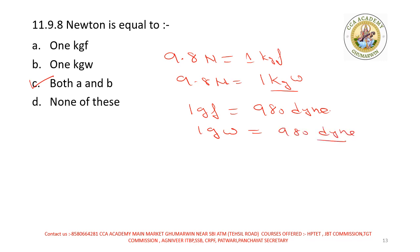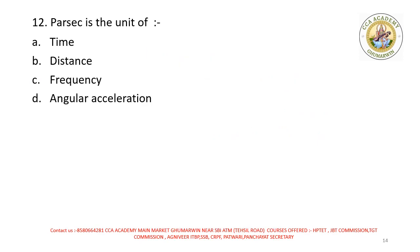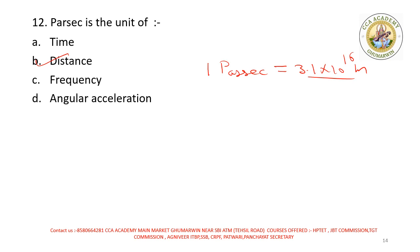Parsec — which unit is called? Options: time, distance, frequency, angular acceleration. Right option is option B — distance. Remember: 1 parsec = 3.1 × 10¹⁶ meters.